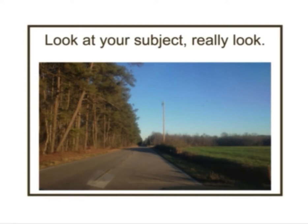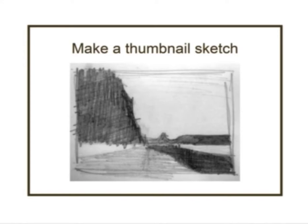That underpainting came from a photograph. The way to create an understanding of shapes is to begin by really looking hard at your subject. Then make a thumbnail sketch that explores those shapes and values in a very simplified way. The rule I use with students for thumbnail sketches is: three to five values and five to seven shapes. Don't go more than that or you'll make it too complex. Keep it simple.